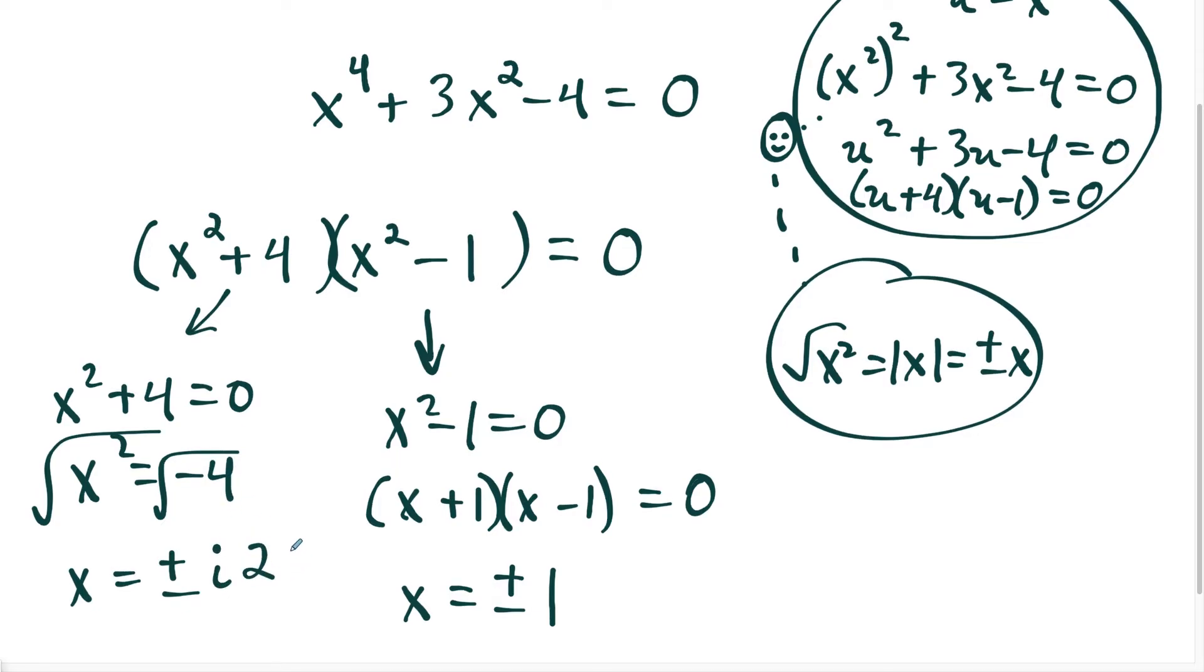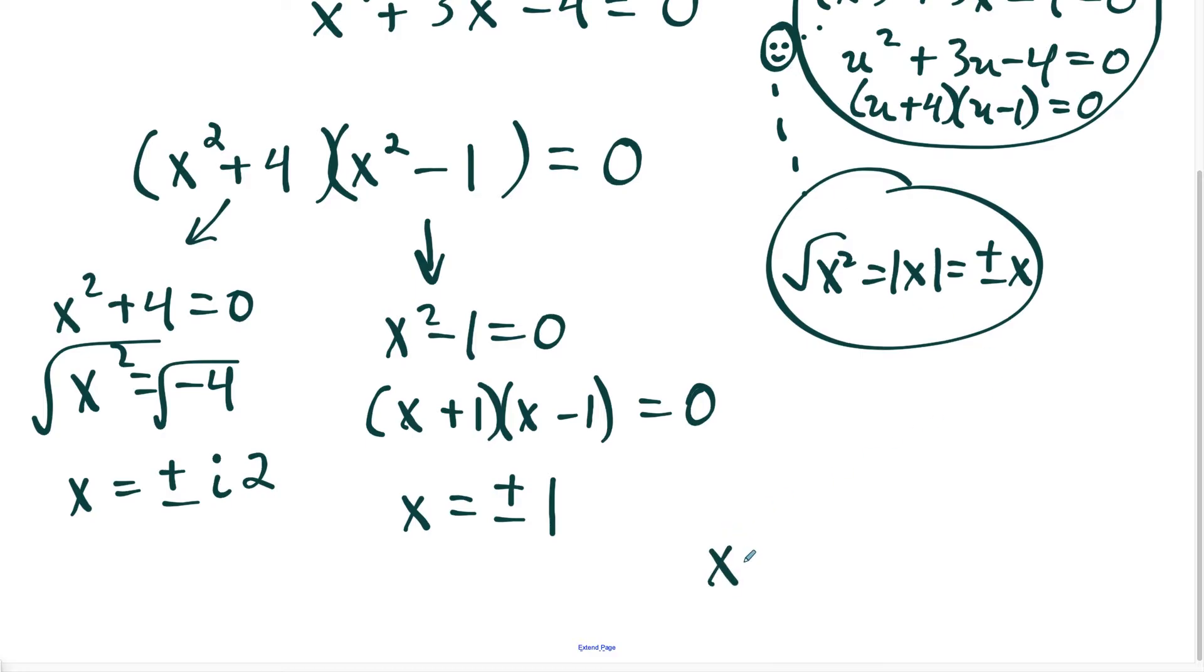So if I had to write my final answer to this all simplified in one set, I would say x is, we'll write our real solution first, we have plus or minus one, or we have plus or minus, and it's better to write the i after the two, plus or minus two i. So here's our solution to the first question.